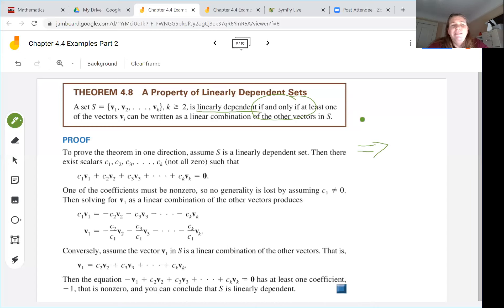So then there are going to be scalars, not all zero, such that these scalars multiplied by the elements of v equals zero. That's based on the definition of linearly dependent we saw earlier.